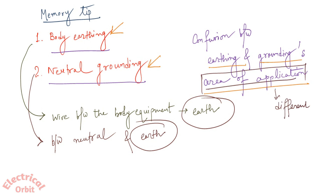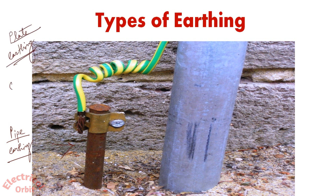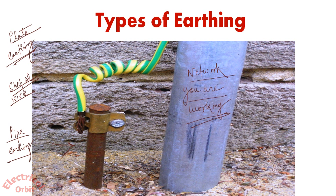In both cases, earth is common; only the area of application is different, as I said at the start of this lecture. Now here I am showing you a type of earthing. This is usually called pipe earthing, where the pipe is connected to the earth and in any unnatural situation the excess current will go to the ground through this pipe. There is another type of earthing also — one is plate earthing. You can even use a specific SWG aluminium wire for earthing, which solely depends upon the requirement or the network you are working on.